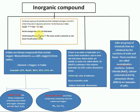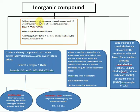Acids are a group of substances that release hydrogen ion (H⁺) when they are in aqueous solution. Acid changes the color of an indicator. The pH value of an acid is below seven — the more acidic the solution, the lower the pH value will be.